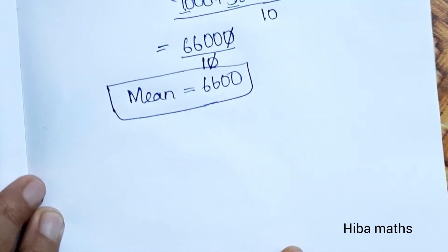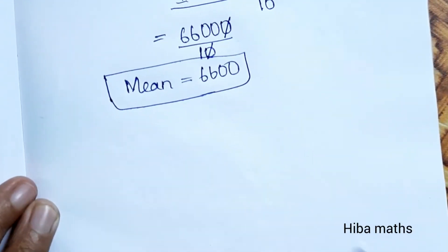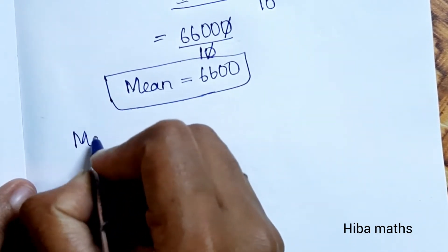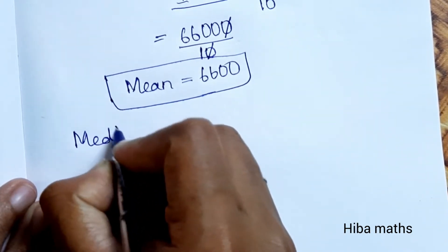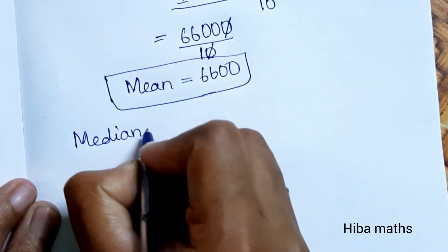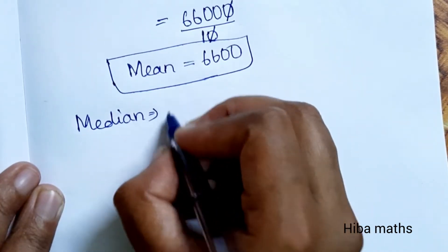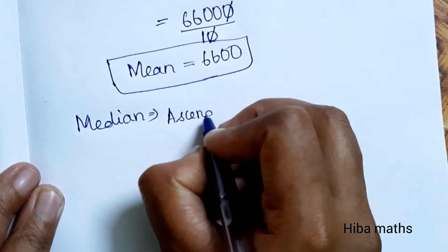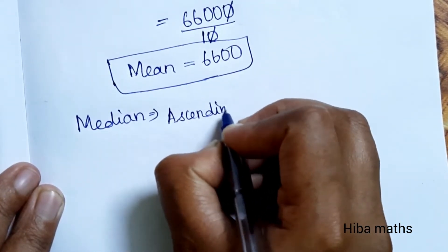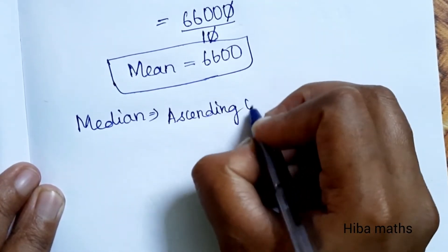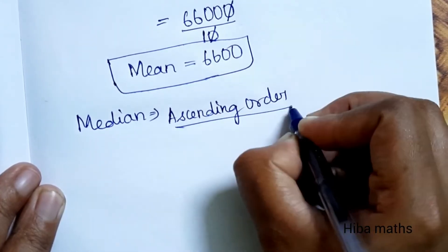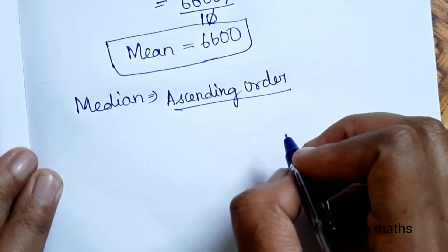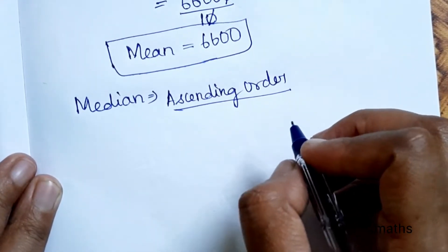First we found the mean. Now let's find the median. To find the median, we arrange the values in ascending order.